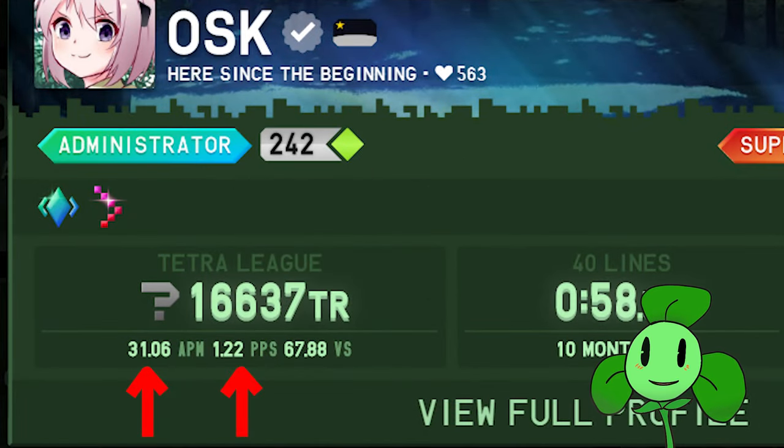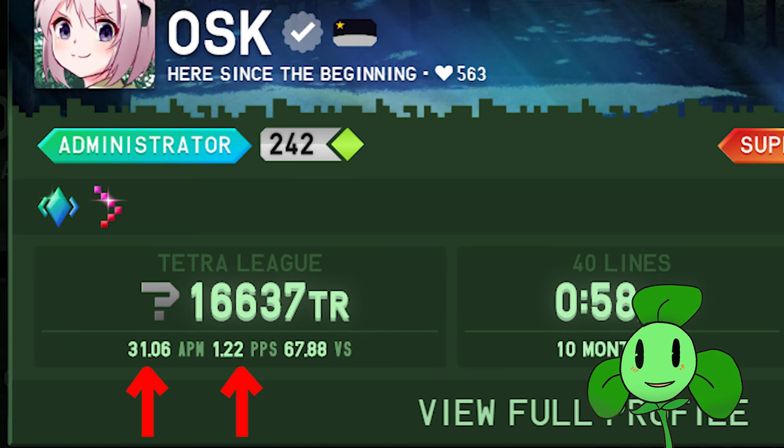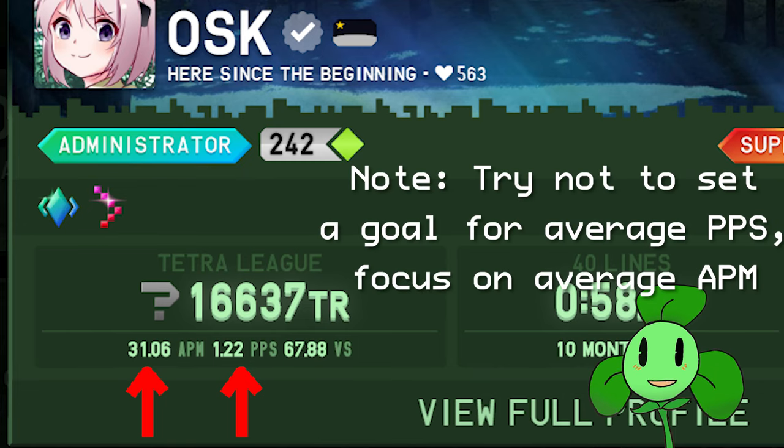See your average APM and PPS, and set a goal for yourself. Reach twenty APM, reach thirty, whatever you think is an achievable short-term goal to help you track how much more powerful your attacks will become.